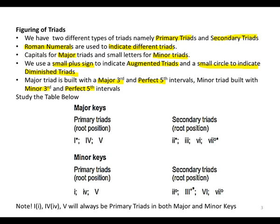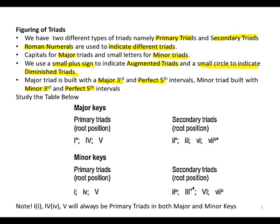Let us study the table below. What we notice is that with major keys and even with minor keys, the primary triads are the same and the secondary triads are the same. The main difference between them is that in primary triads for major keys, they are all major chords because they are written in capital letters. Whereas the primary triads in minor keys — one and four, or the tonic and subdominant — are minor chords or minor triads.